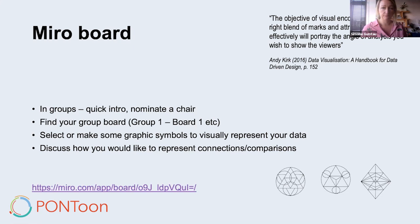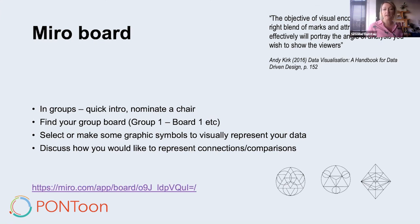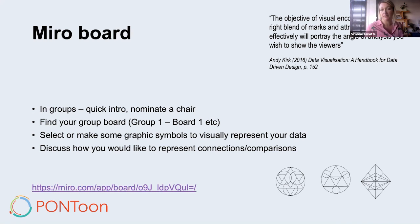The objective of visual encoding is to find the right blend of marks and attributes that most effectively portrays the angle of analysis you wish to show the viewer. The important thing is that this is where you are making the decisions. I wanted you to have your own data because it's the thing you know best — you've created it, it's in your hands, you've got the power over it.